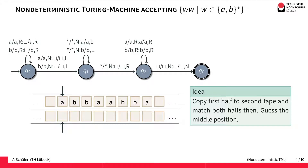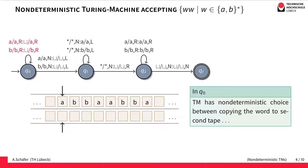We are going to accept this language using a Turing machine that is allowed to guess. This Turing machine will actually guess the middle of the word. Such Turing machines are called non-deterministic Turing machines, and this guessing is done by a so-called non-deterministic choice.